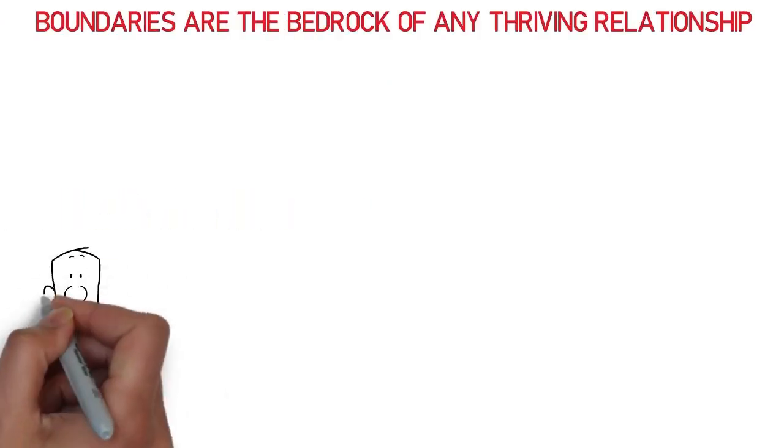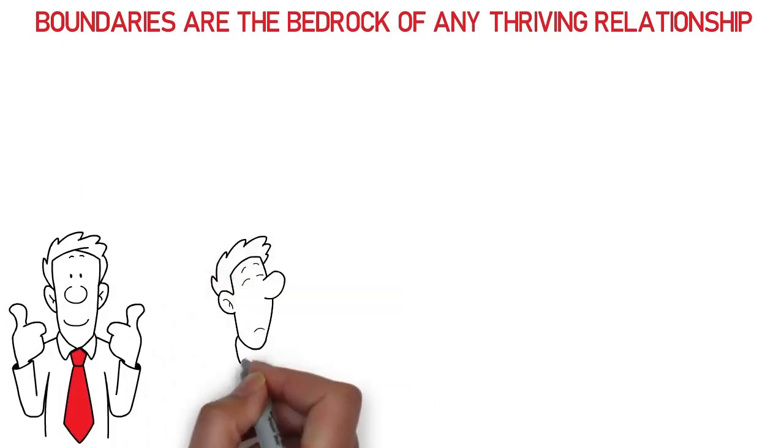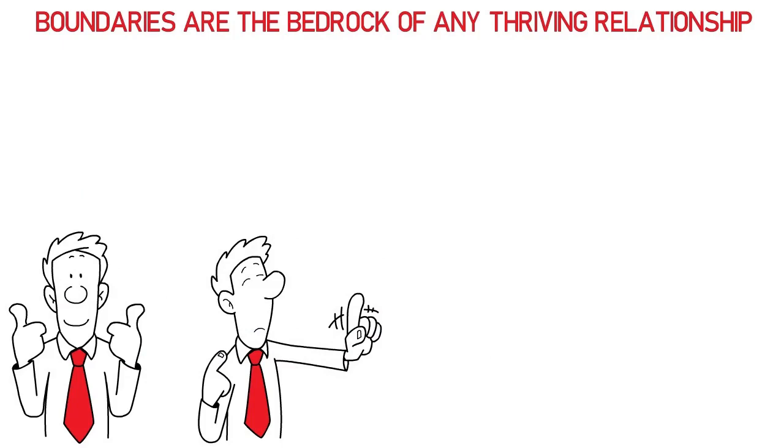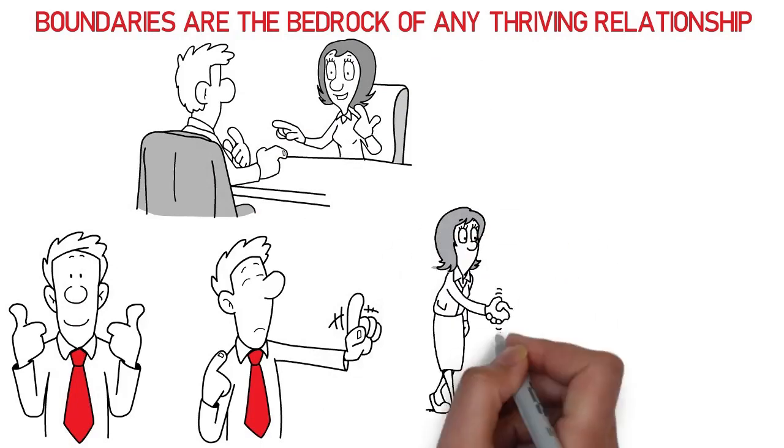2. Establish strong boundaries. Boundaries are the bedrock of any thriving relationship, and in the face of narcissistic behavior, they are indispensable. Start by clearly defining what behavior is and isn't acceptable to you. This could range from how you're spoken to, to how your personal time and space are respected.